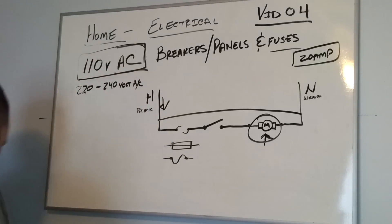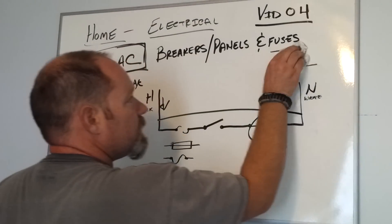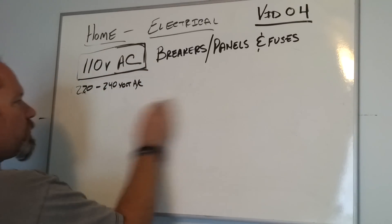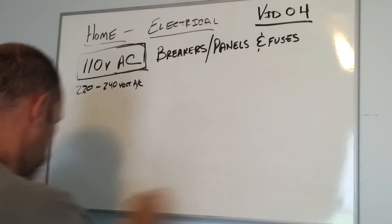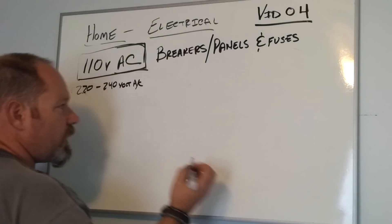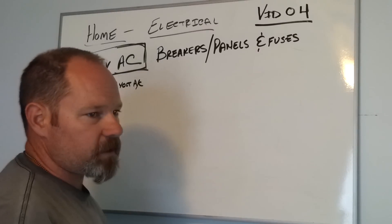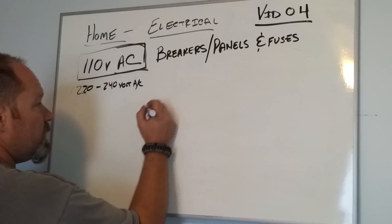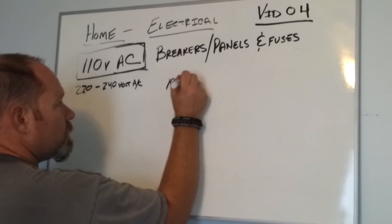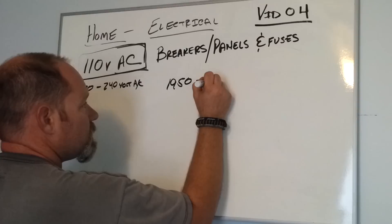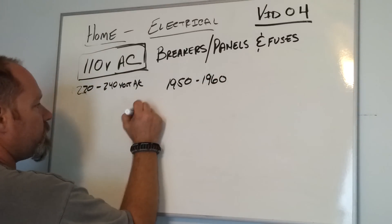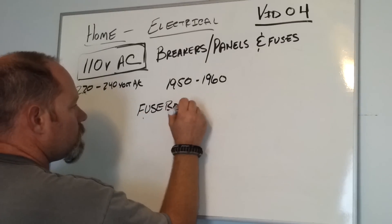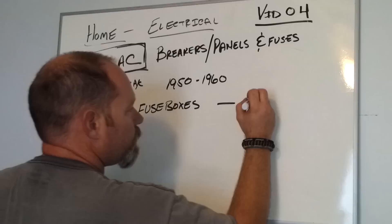Now let me draw out an electrical panel. There are two different types. Somewhere in the 1950s to 1960s, homes switched over from fuse boxes to breaker panels. Most everybody has a breaker panel unless you have an older home that hasn't been updated yet.